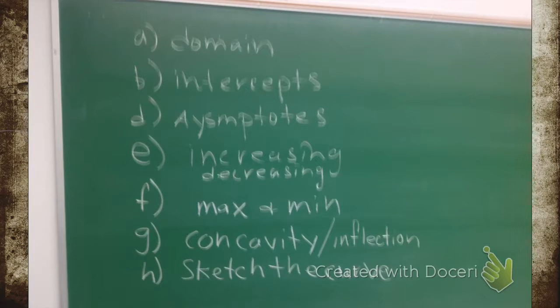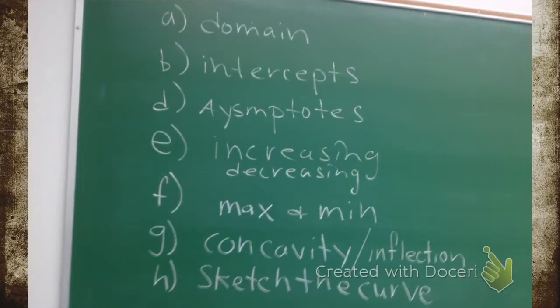Then, we find the asymptotes. We're about to do that now. Then, we find out where it's increasing and decreasing. Then, we find the mins and max. Then, we find the concavity and our inflection. And then we sketch the curve. Let me put that into focus for you. Focus, people. This is a long process. We're already done with the first two parts.